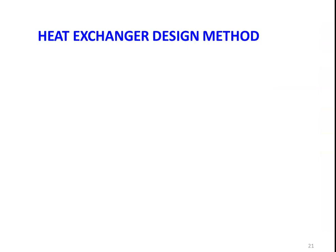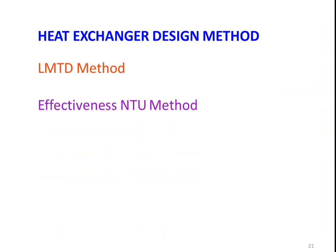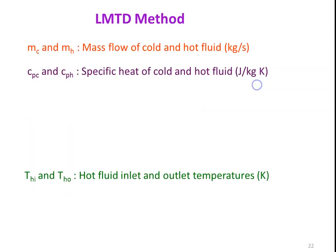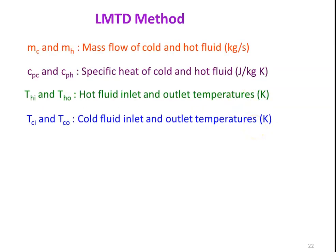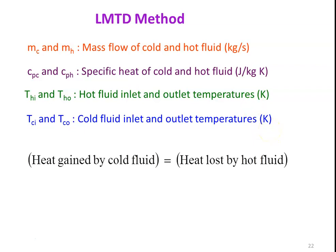For the design of heat exchangers, there are two methods: the LMTD method and the effectiveness-NTU method. In this lecture we discuss the LMTD method; the effectiveness-NTU method will be covered in the next lecture. The key terminologies for LMTD method are: Mc and Mh — mass flow rates of cold and hot fluid; Cpc and Cph — specific heats of cold and hot fluid; Thi and Tho — hot fluid inlet and outlet temperatures; Tci and Tco — cold fluid inlet and outlet temperatures.